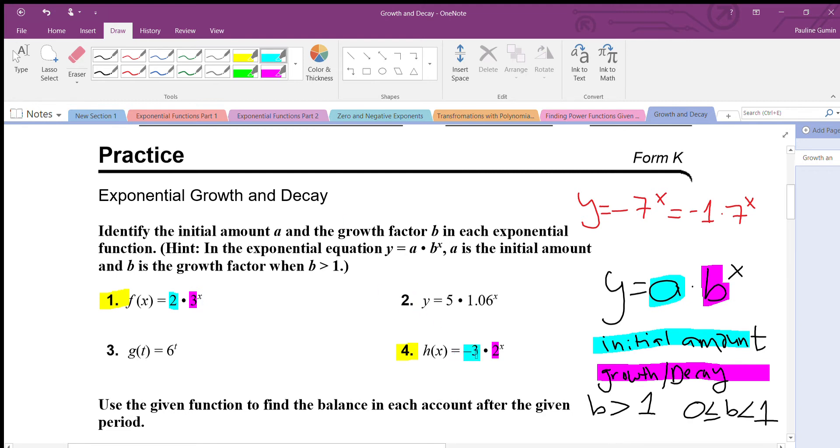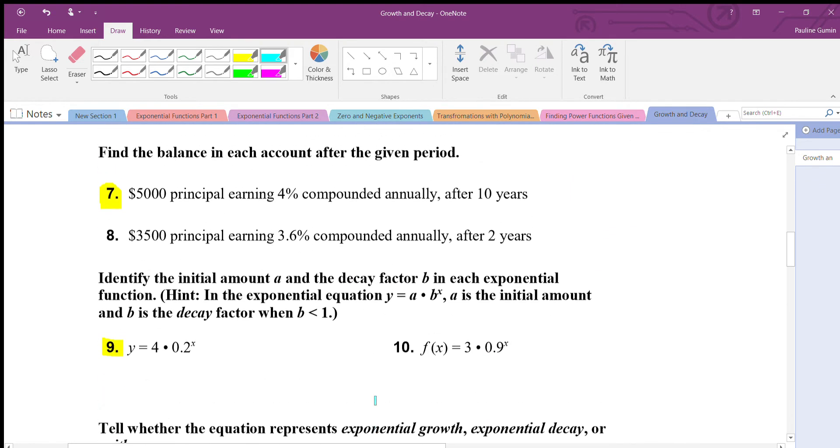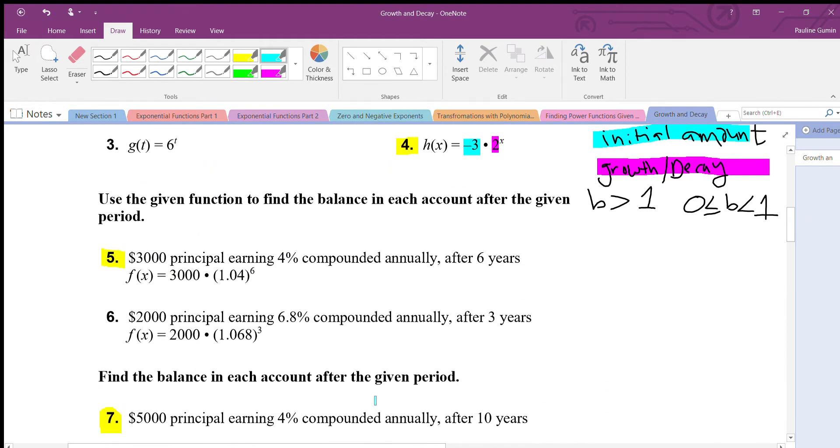In number five, this is a pretty common equation that you're going to see when it comes to interest. We have a three thousand dollar principal earning four percent compounded annually after six years. Our three thousand principal, that's our initial amount. Principle is what you start off with.